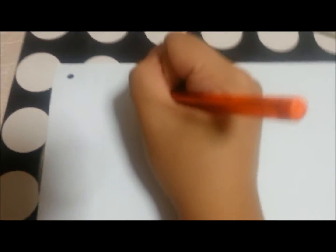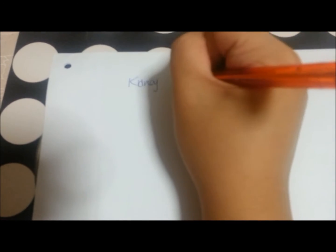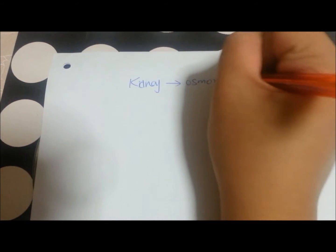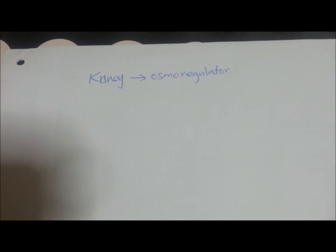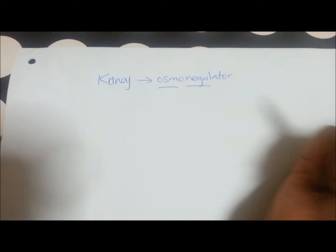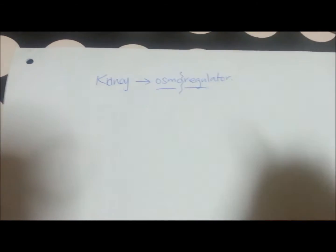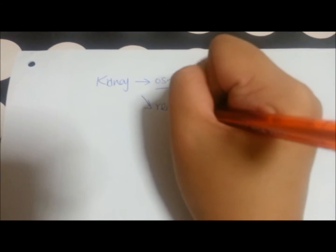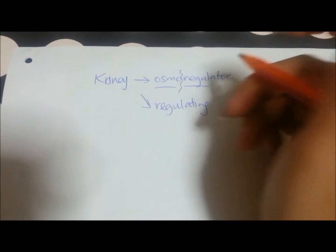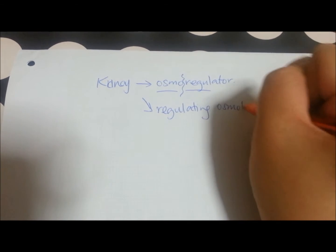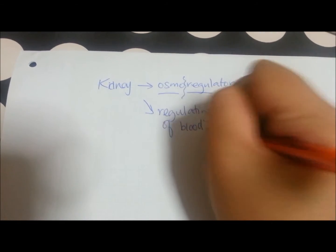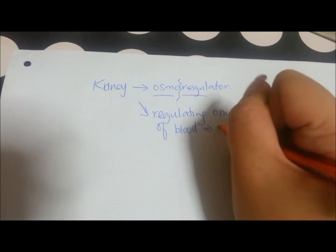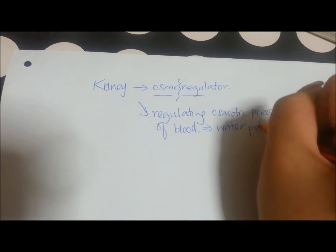The kidney is very important because it serves as an osmoregulator. What does an osmoregulator do? The word 'osmo' and 'regulate' gives you a clue — it is regulating your osmotic pressure, specifically the osmotic pressure of your blood. Effectively, this refers to the water potential in your blood.